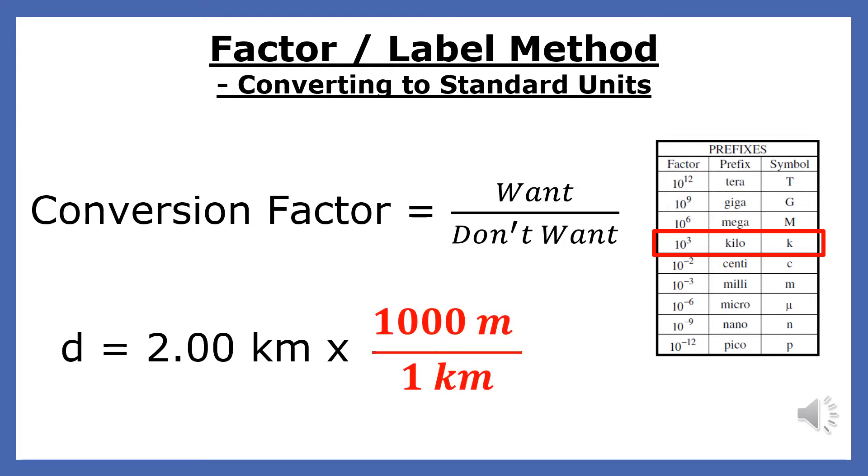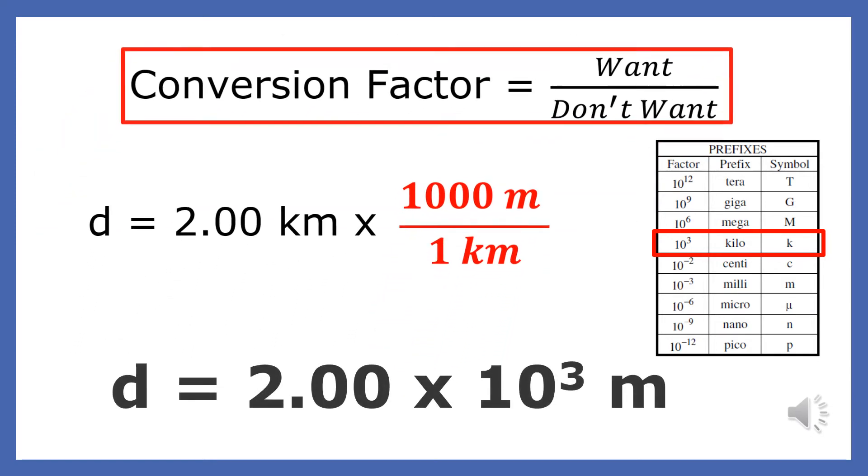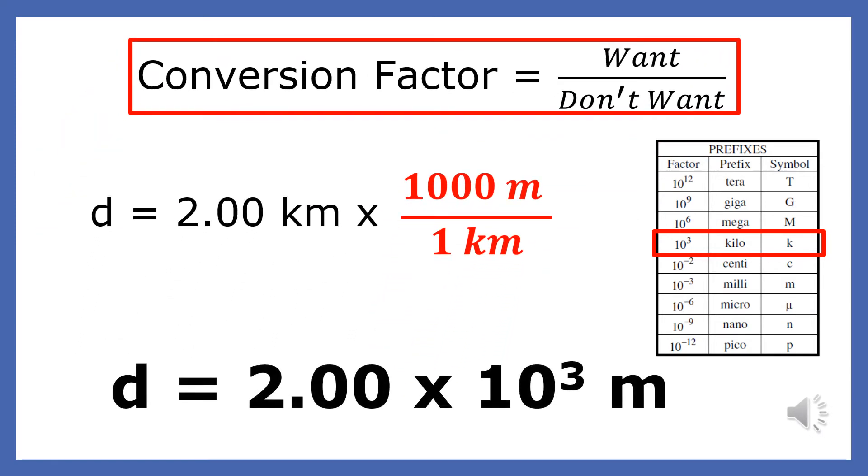All conversion factors must equal the number 1. Since the reference table tells us that 1 kilometer is 1,000 meters, our conversion factor becomes 1,000 meters divided by 1 kilometer. When we multiply our number by the conversion factor, the unit we don't want cancels out and the unit we want stays. We find that 2 kilometers equals 2,000 meters.